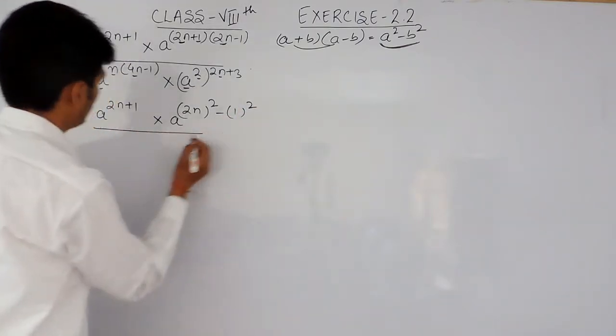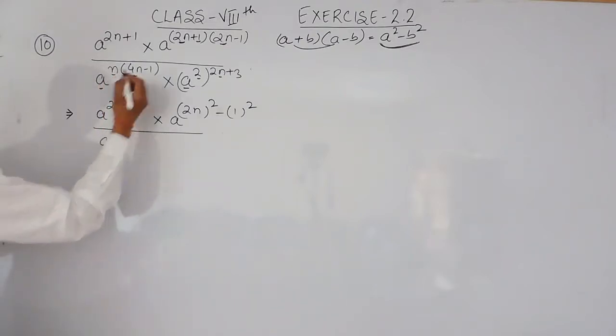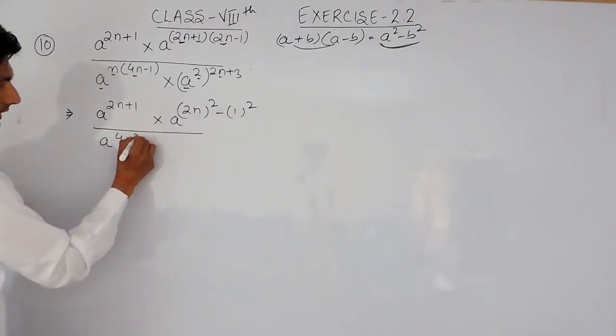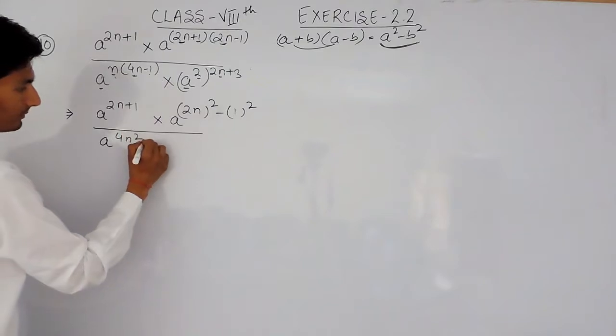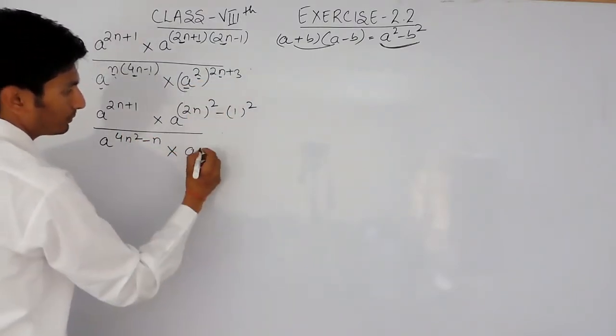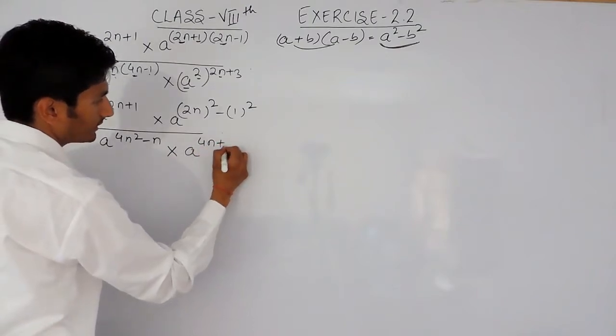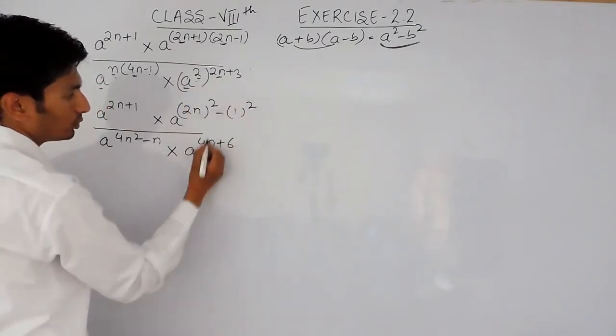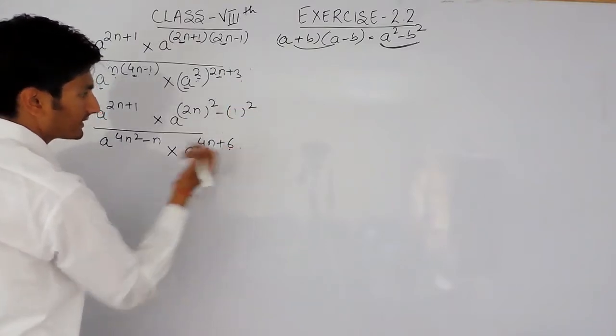A whole upon, in the denominator, n when multiplied by 4n will be 4n squared, n multiplied by 1 will be minus n. Multiplied by, again these are two powers, this will be 4n plus 6, 2 multiplied by 2n is 4n, 2 multiplied by 3 is 6.